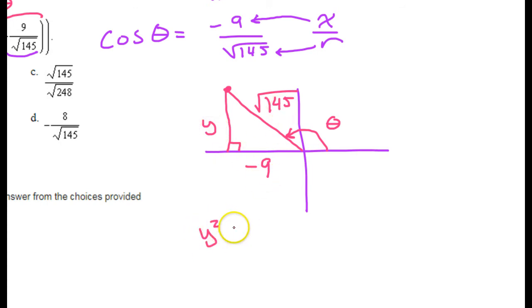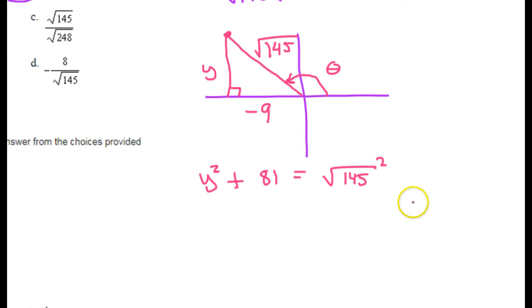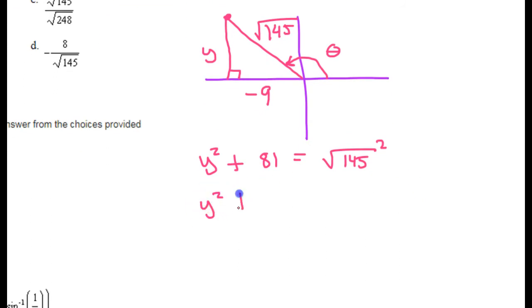So that means y squared, negative 9 squared is 81, is equal to c squared. So that's radical 145 squared. So you probably know that if you square a radical, the radical just goes away. So, of course, then we will subtract 81 from both sides. So that gives us y squared is equal to 64, which tells us that y is either plus or minus 8.